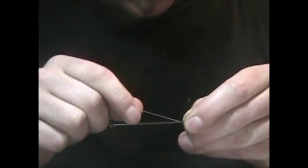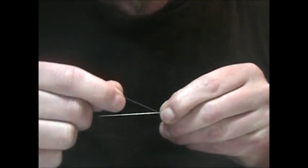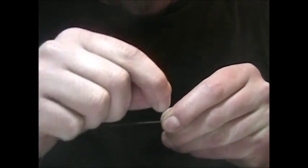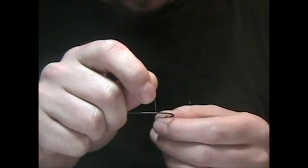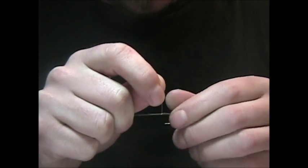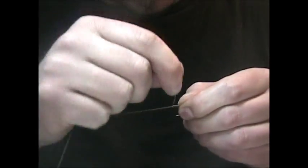Once you have that done, start your thread and start it right at the point of the hook. Trim out your waste and then go down to about the barb or so.